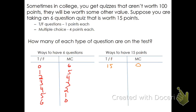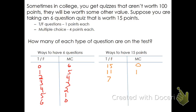Then you might think: if I do 14 true-falses, that's 14 points, but adding even one multiple-choice won't give me exactly 15 total. So the next option would be 11 true-falses — that's 11 points — and one multiple-choice question gives the other four points for 15 total. Continuing the pattern, you could have seven true-false for seven points and two multiple-choice for eight more points. And then three and three — I think that might be the last one that works.